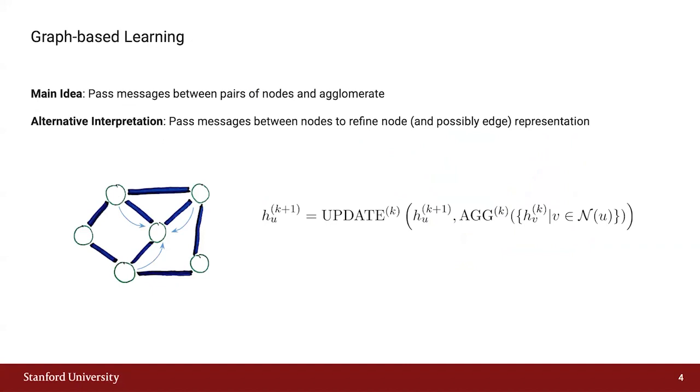A GNN leverages the node features and structural information encoded by edges to learn how to propagate information across the graph most effectively. This capability allows graph neural networks to perform tasks such as node classification or link prediction. During each message passing iteration, a hidden embedding H corresponding to a node U will be updated according to information aggregated from that node's graph neighborhood. This update can be expressed as displayed here, where update and aggregate are arbitrarily differentiable functions, most commonly MLPs.